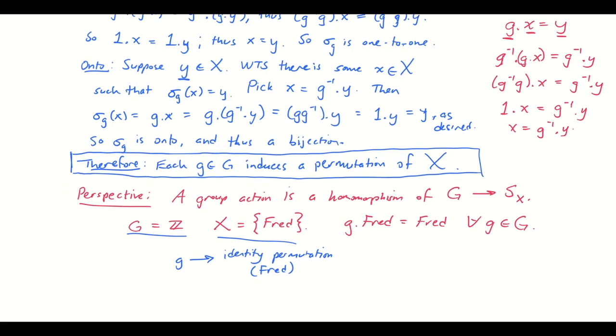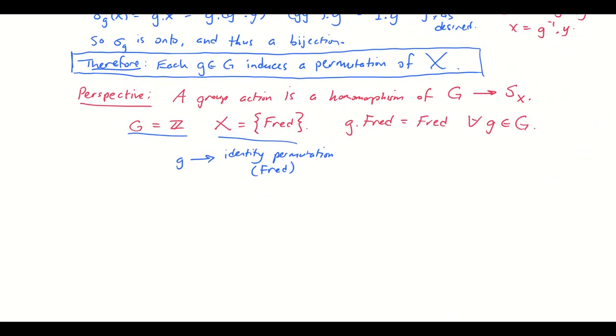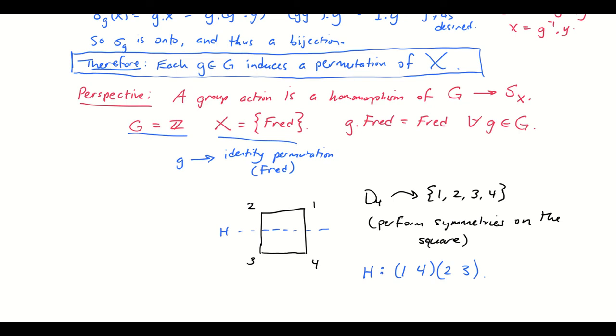But sometimes you do get something kind of interesting. So here's another example of a group action. I'm going to draw a square and label the vertices one, two, three, and four. And I'm going to have D4 act on the square or act on the set of vertices rather by performing symmetries on the square. So for example, if I select the symmetry H, reflection across a horizontal line, then H does the following to vertices one, two, three, and four. It sends one to four, and four back to one, and sends two and three to each other.